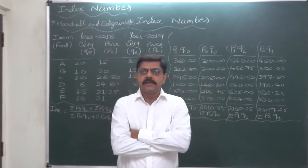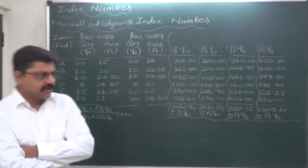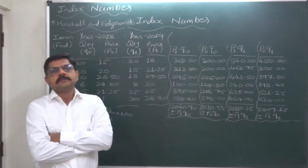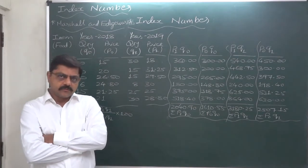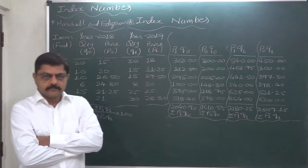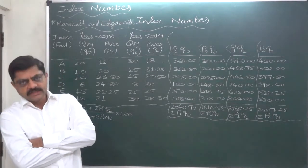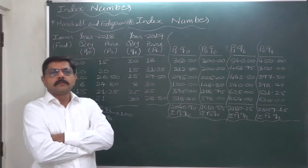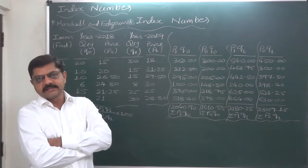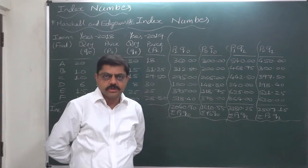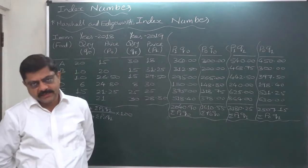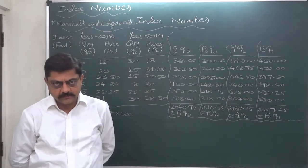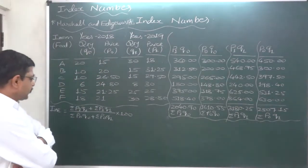As we are well aware that Pashe and Fisher index numbers consider only base year quantity and current year quantity. Fisher's index number is geometric mean of Laspeyres and Pashe index number, and Dorbys and Bowley index number is simple arithmetic mean of Laspeyres and Pashe index numbers. But in case of Marshall and Hoverty index number, it is somewhat different.